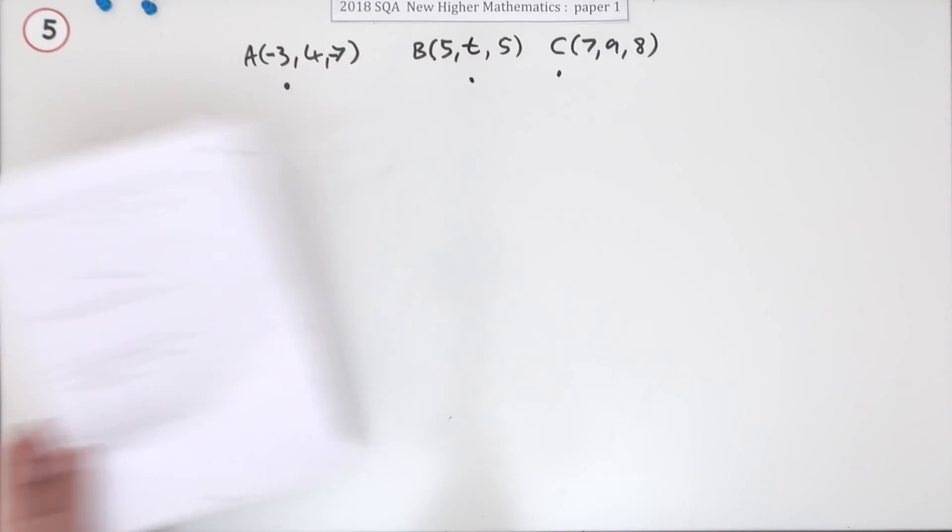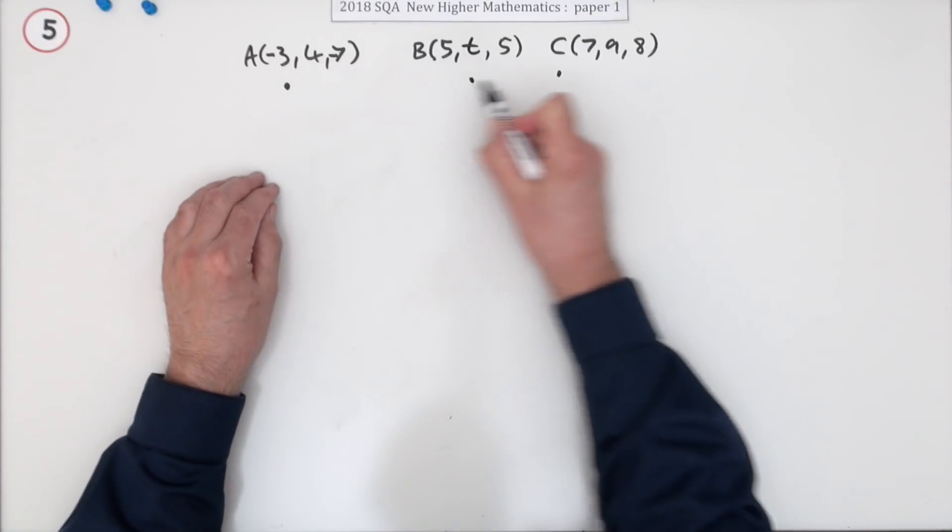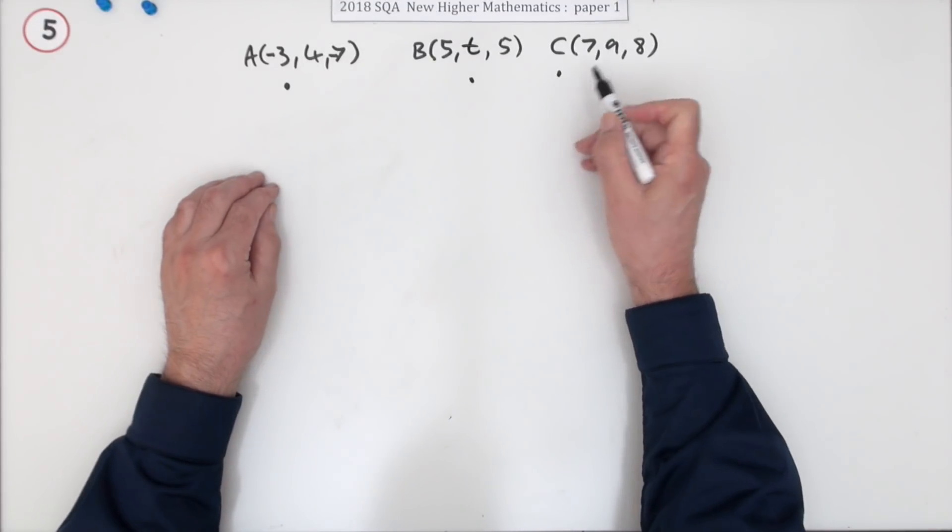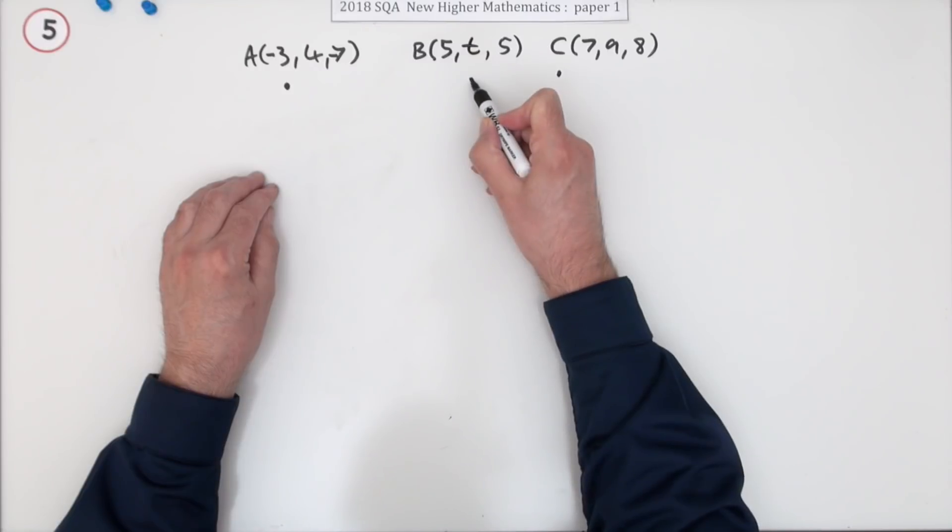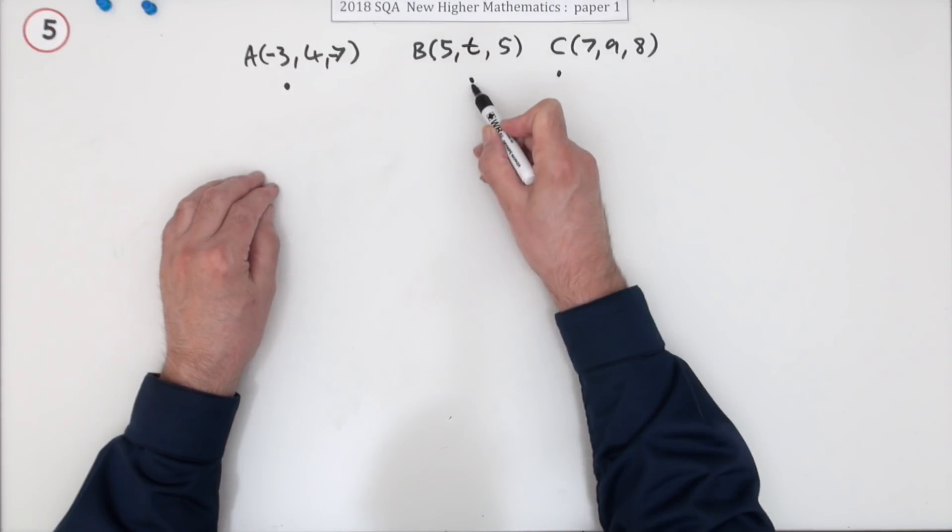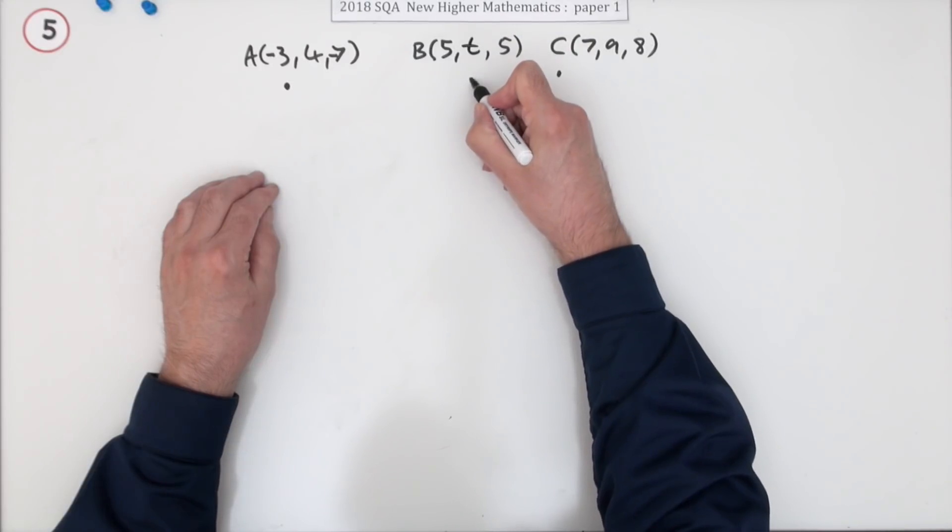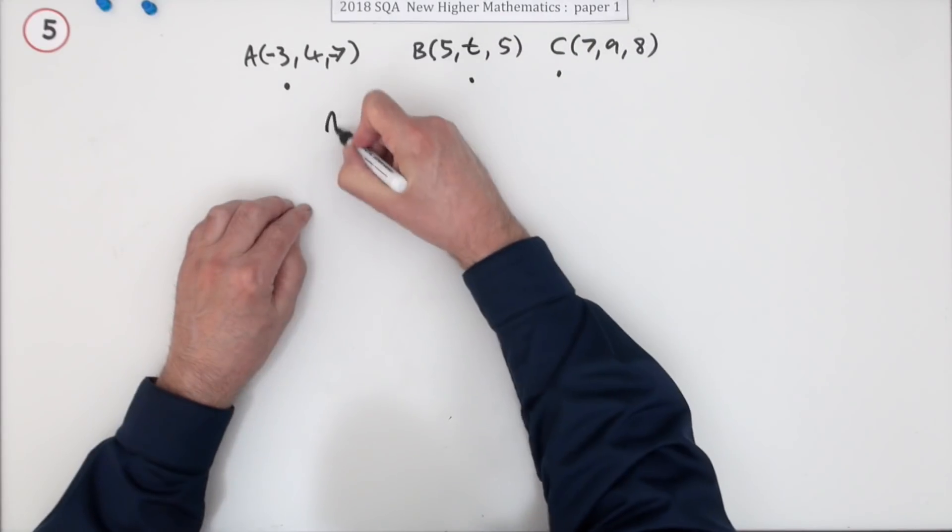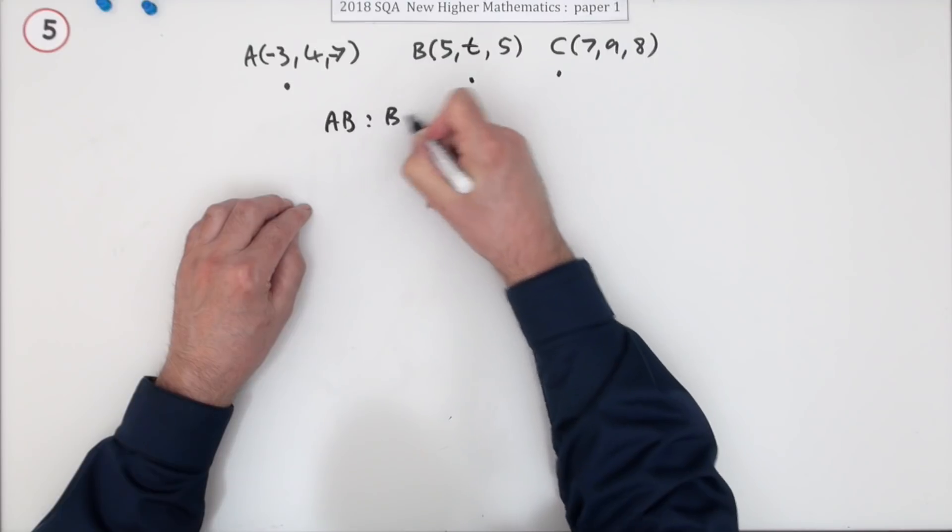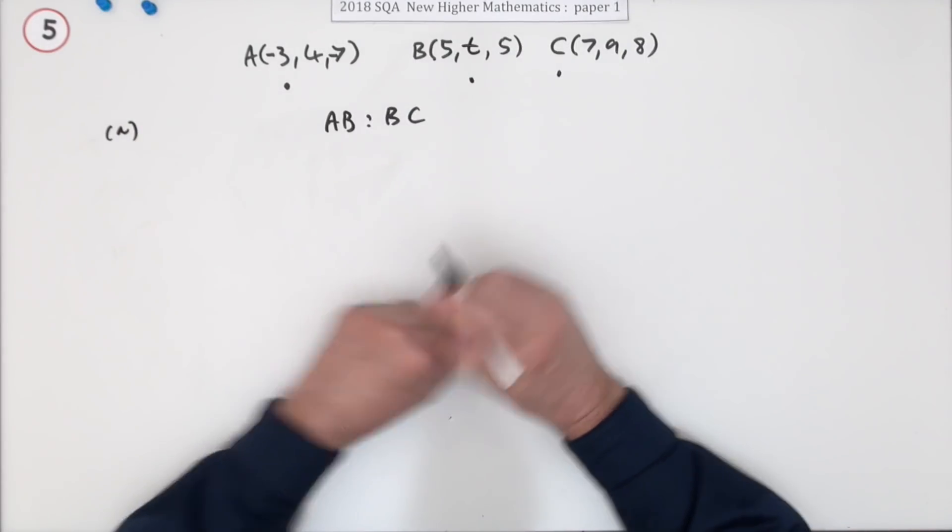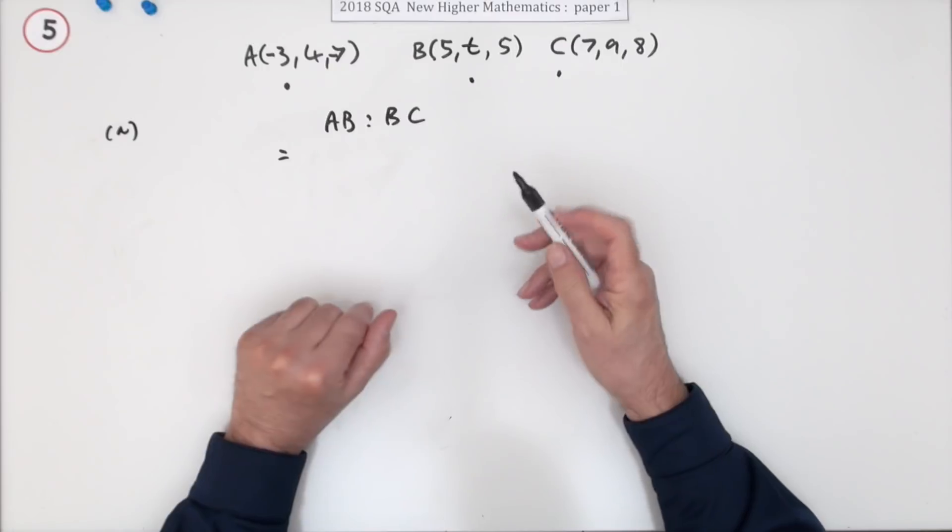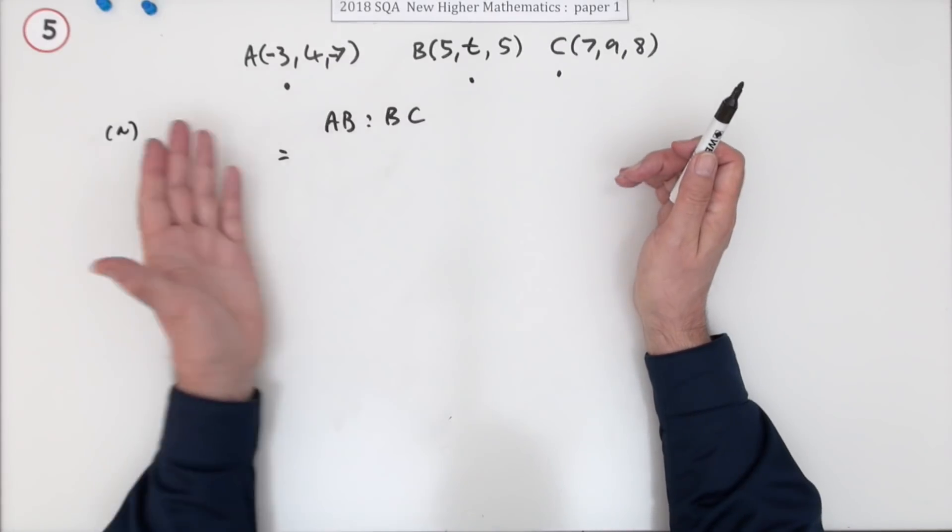If those points are collinear, that means the vector AB must be a multiple of the vector BC. So it says what's the ratio that B divides AC? I want AB to BC. This is for part A. You don't need to set it all out because it just says state and it's only one mark.